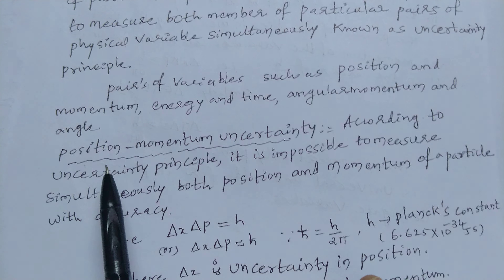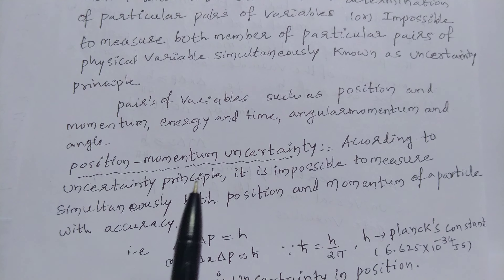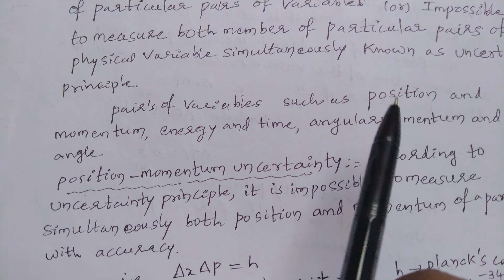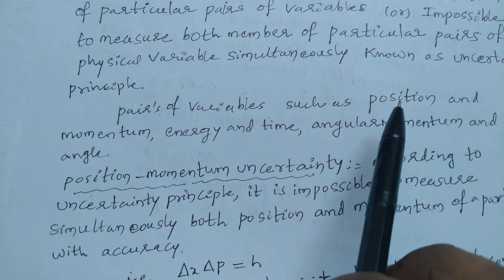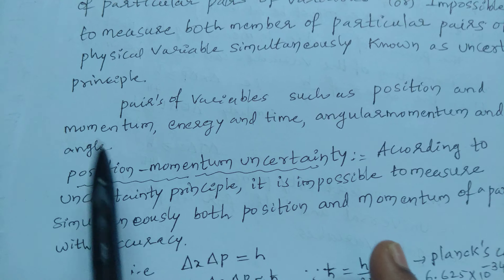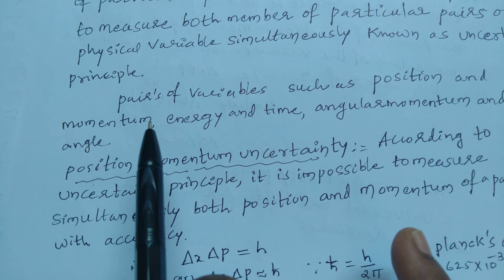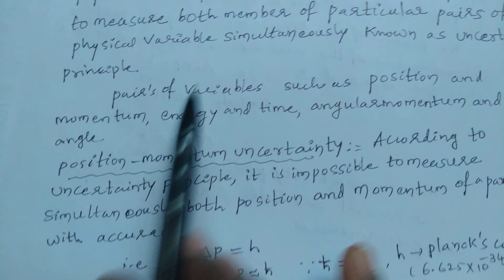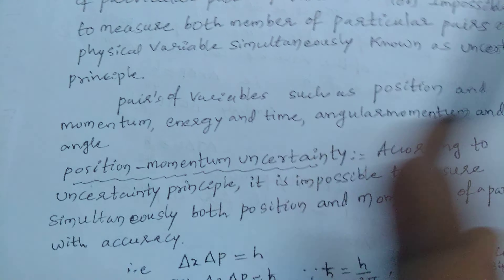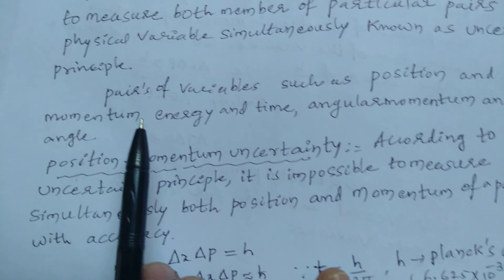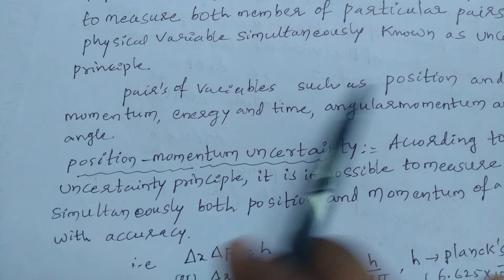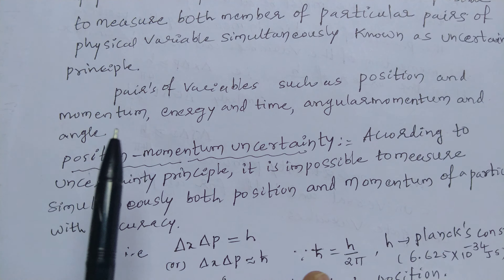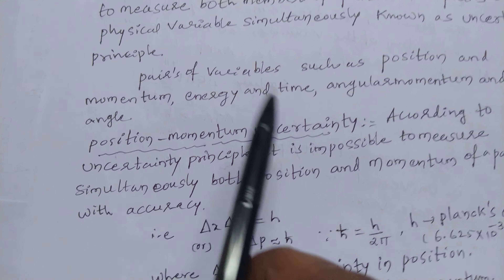Now, first we discuss position and momentum uncertainty. The uncertainty in position and uncertainty in momentum — multiplying these two physical variables, you will get a certain limit that must be equal to Planck's constant value. This is known as the Position-Momentum Uncertainty Principle.